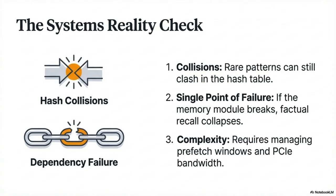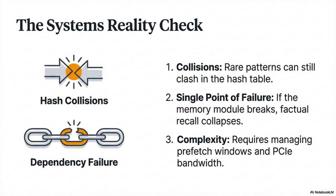What does this all mean for the next generation of models, for the person deploying them? The future is about better budgeting, not brute force. Conditional memory looks like a strong candidate for a new foundational primitive — it decouples massive storage from sequential compute, meaning huge capacity without VRAM panic and more effective depth for reasoning because the backbone is freed up.